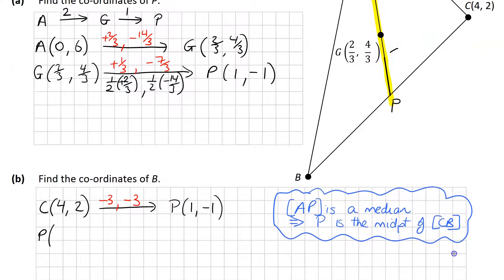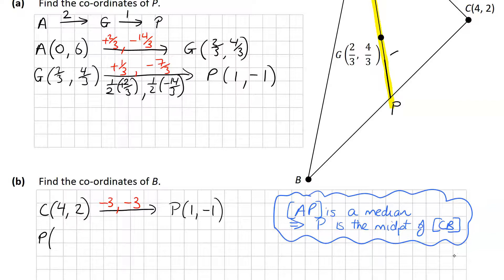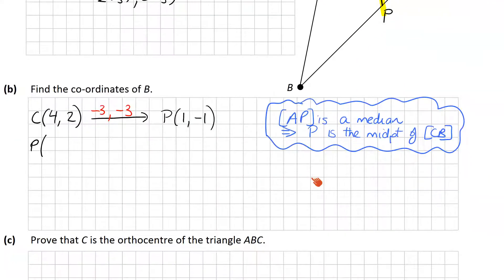Okay, so now we know from C to P here. So C to P was minus 3, minus 3, in units. And we'll use the exact same units again to go from P to B, because we know that P is the midpoint.